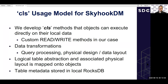For Skyhook's CLS usage model, methods operate directly on local data — custom read/write methods that perform data transformations for query processing, such as select and project, or compression. We also use transformations for physical design: converting data from format A to format B or reorganizing data layout on disk. We provide a logical table abstraction whose associated physical layout is mapped onto individual objects, and we store table metadata in the local RocksDB instance, enabling runtime metadata queries.